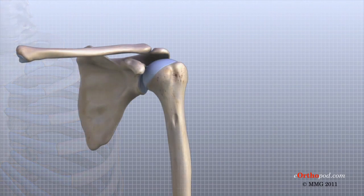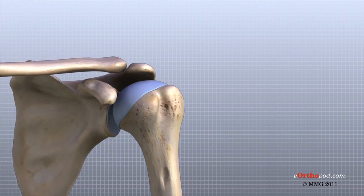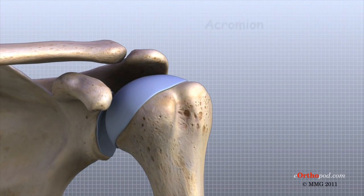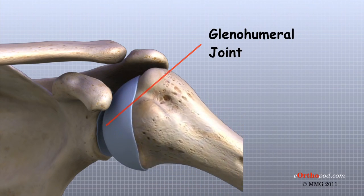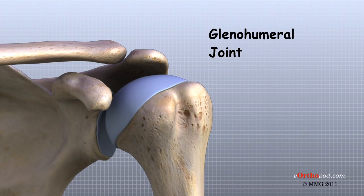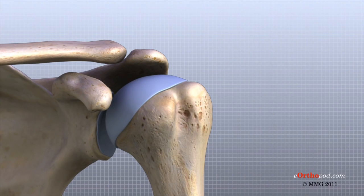The roof of the shoulder is formed by a part of the scapula called the acromion. There are actually four joints that make up the shoulder. The main shoulder joint, called the glenohumeral joint, is formed where the ball of the humerus fits into a shallow socket on the scapula. This shallow socket is called a glenoid.